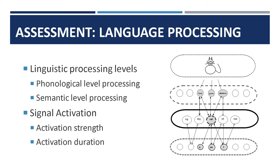As you recall, the interactive activation model holds that language processing, both receptive and expressive, proceeds through different levels. Language output starts with an idea, represented here by the picture of the cat. It then moves on to the activation of semantic features, such as furry or whiskers. From there, it proceeds to the lexical level for word retrieval, and finally to the phonological level for phoneme selection. In aphasia, deficits are seen at the lexical or the phonological level. A key feature of the TULSA is that it can determine at which level the patient has the most difficulty.